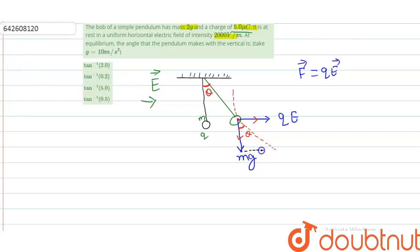Now for finding the value of theta, I am taking a triangle like this. Suppose this is O, P, and this is Q. So in triangle OPQ, tan theta will be what?